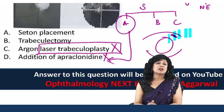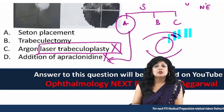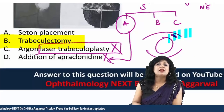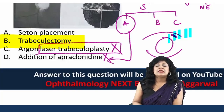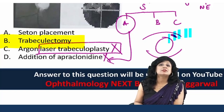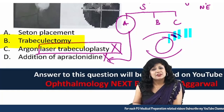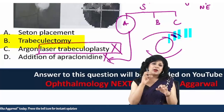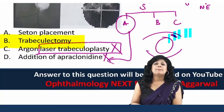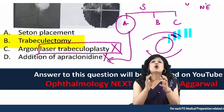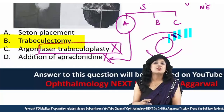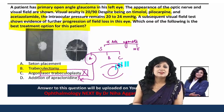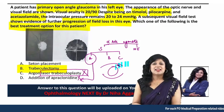Trabeculectomy is the surgical treatment of choice when medical therapy fails, and this case is a clear indication — multiple combination therapy is not working. So the answer is trabeculectomy. This question demonstrates that factual knowledge is still important, but NEET PG now tests clinical application — giving you a patient scenario rather than asking directly about indications or side effects. That approach makes better doctors.